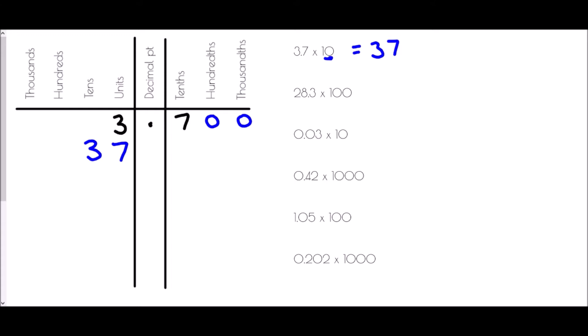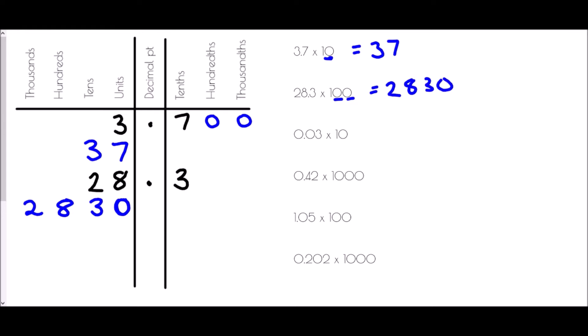For 28.3 times 100, we have 2 in the tens, 8 in the units, a decimal point, and 3 in the tenths. Because we're multiplying by 100 — two zeros — everything moves two places to the left. The 2 goes to the thousands, the 8 becomes 800, the 3 moves to the tens, and the units need a placeholder zero. So 28.3 times 100 is 2830.